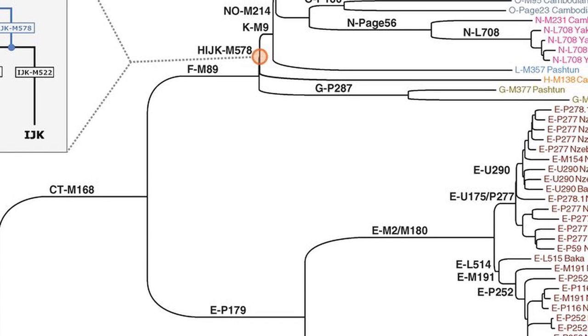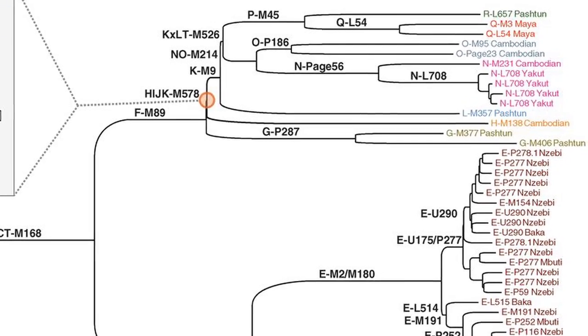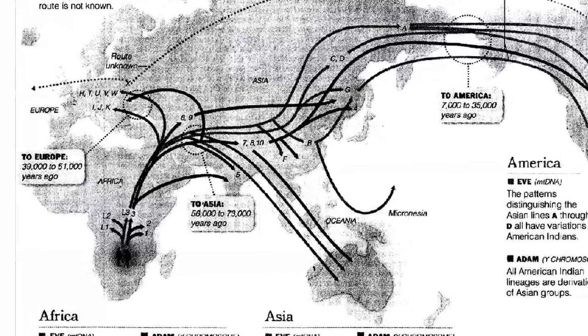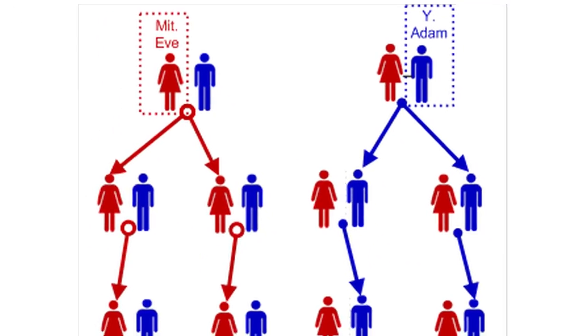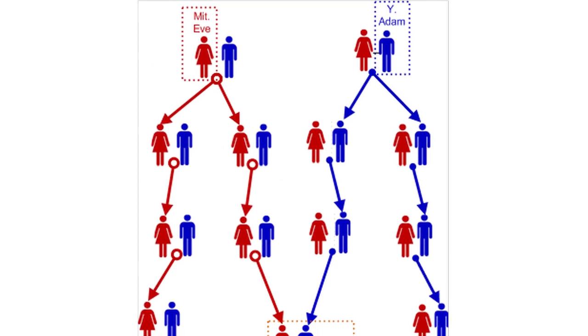The F haplogroup appears to have diverged around 50,000 years ago and is representative of all non-African haplogroups. This date also happens to coincide with the migration of Homo sapiens out of Africa. Although mitochondrial Eve and Y-chromosomal Adam lived within a couple tens of thousands of years of each other, it is highly unlikely that they ever met.